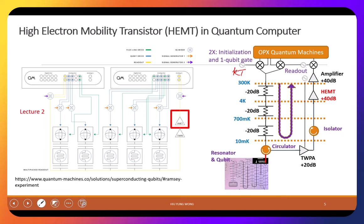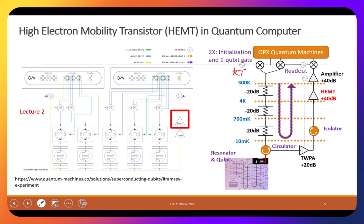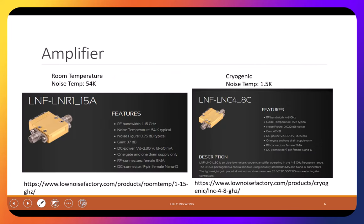HEMT is very important for a few reasons: it has low noise, and it has high gain due to high speed. Here are some examples used in quantum computers. I work with Lawrence Livermore Lab and they actually purchased something related to this to build their quantum computer. You can see a parameter we'll discuss later: noise temperature.